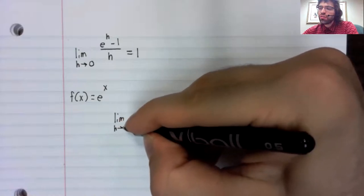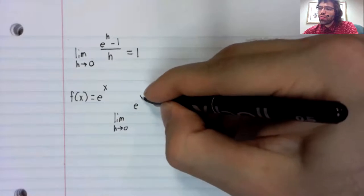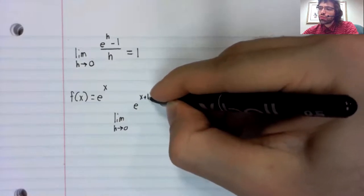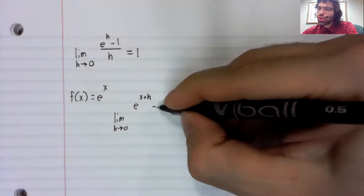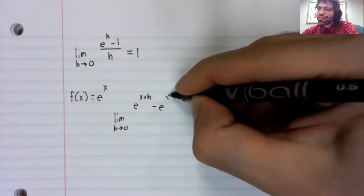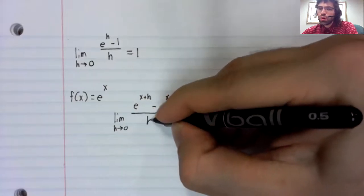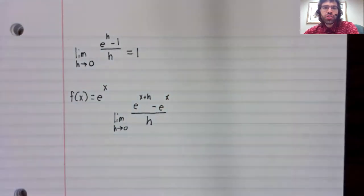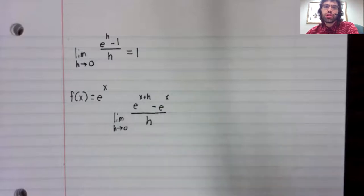f of x plus h minus f of x, all divided by h, the limit as h goes to zero.